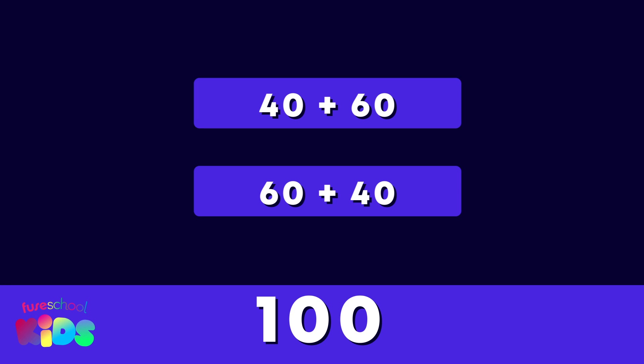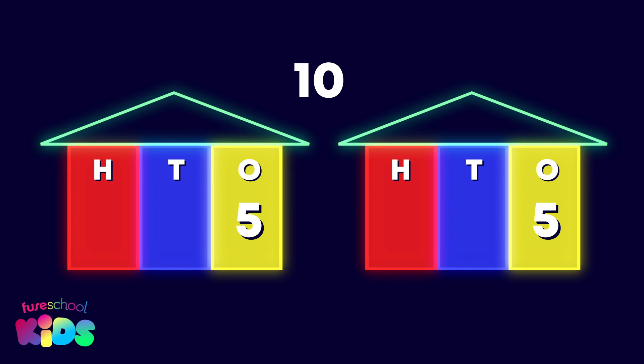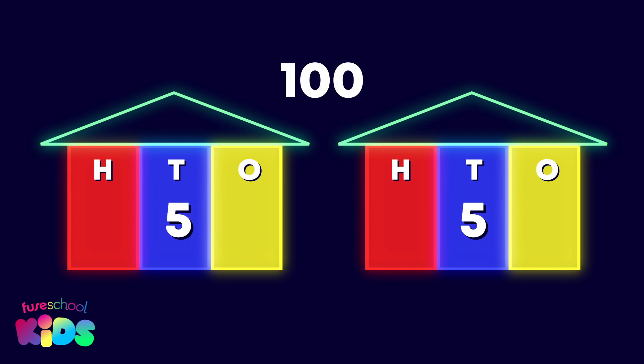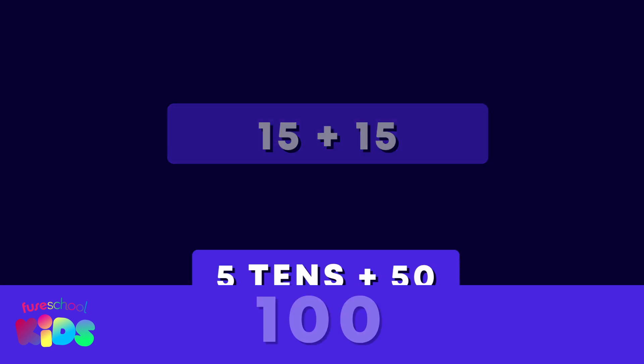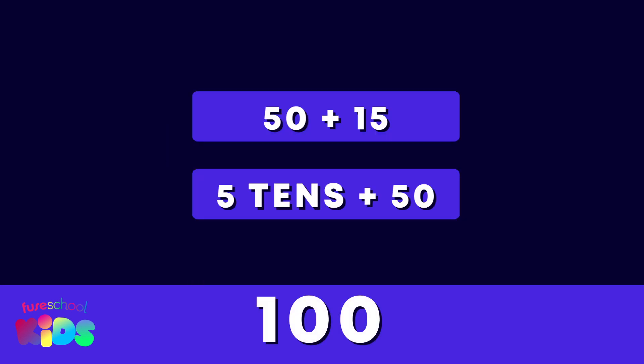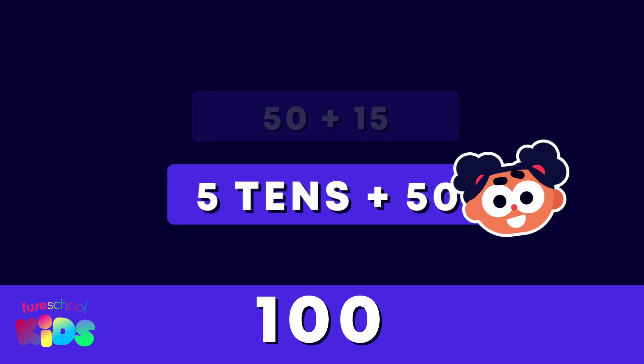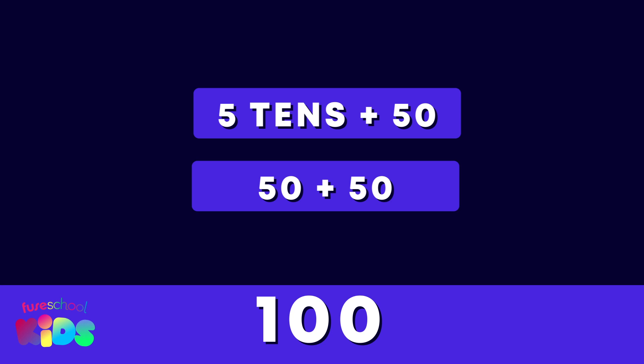Sixty plus forty equals one hundred. The last number bond to ten is five and five. Both fives have moved to the tens place. Fifty plus fifty equals one hundred. Well done — one hundred equals fifty plus fifty.